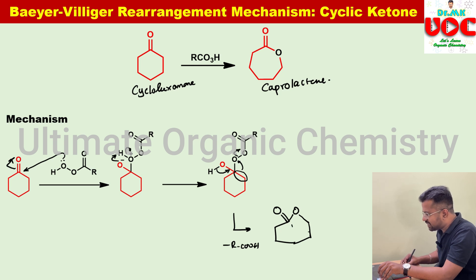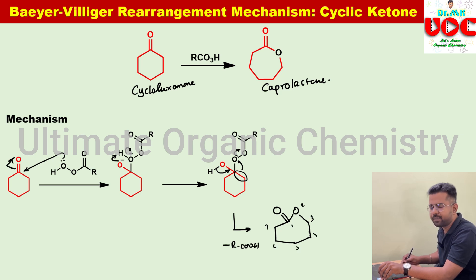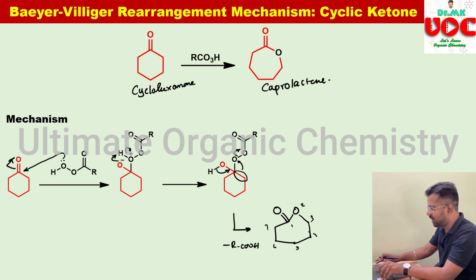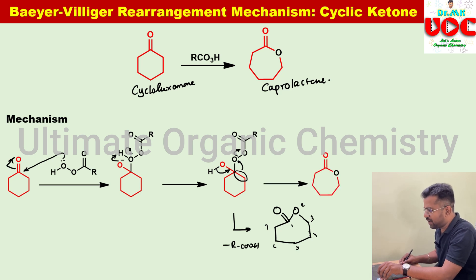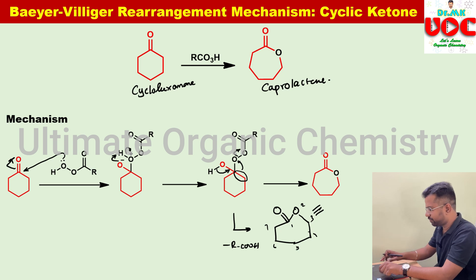If you look at this structure, counting the ring atoms: 1, 2, 3, 4, 5, 6, 7 — this is a 7-membered ring system, and that is called caprolactone. So that is how you draw the mechanism for the cyclic ketone case.